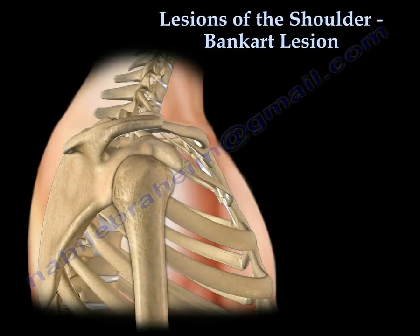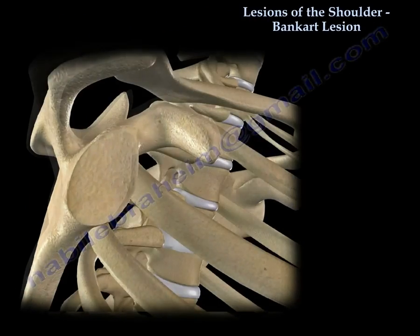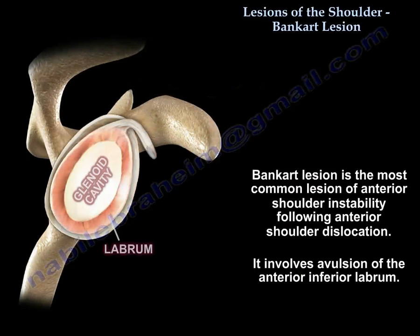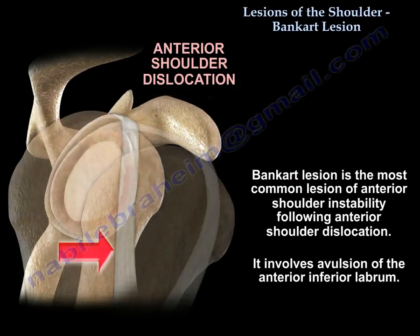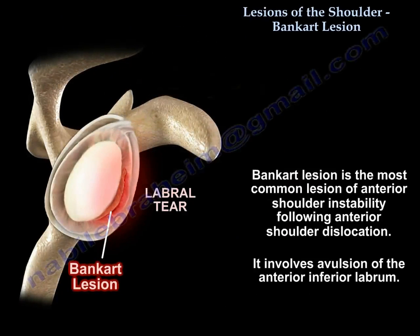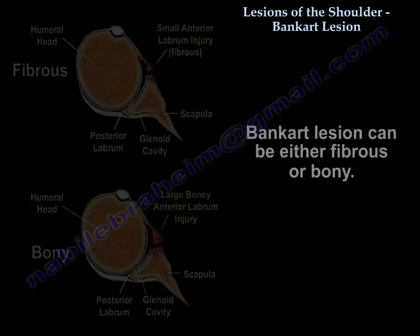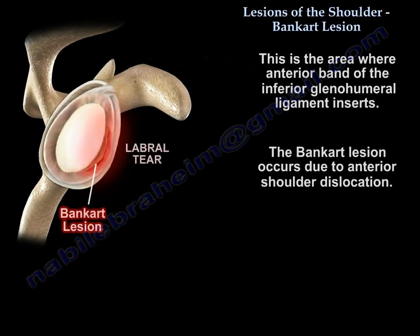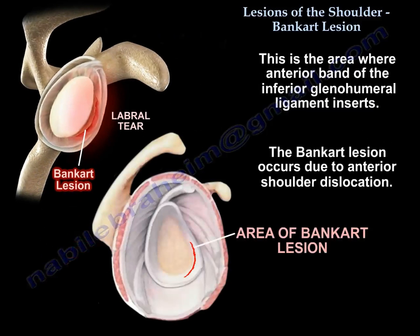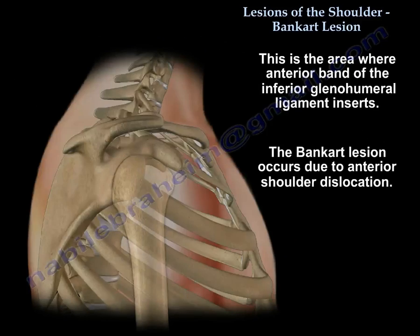Bankart lesion is the most common lesion of anterior shoulder instability following anterior shoulder dislocation. It involves avulsion of the anterior inferior labrum. Bankart lesion can be fibrous or bony. This is the area where the anterior band of the inferior glenohumeral ligament inserts, and this injury occurs from anterior shoulder dislocation.